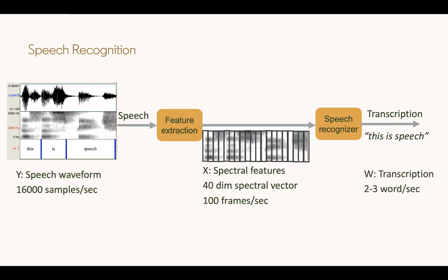As you can see, the input speech waveform is sampled at about 16,000 samples a second. When we do feature extraction, we are at about 100 frames a second. But when we output words, we only have about two or three words per second, because that's the speed at which we speak. This represents a large decrease in data as we go from samples to words.